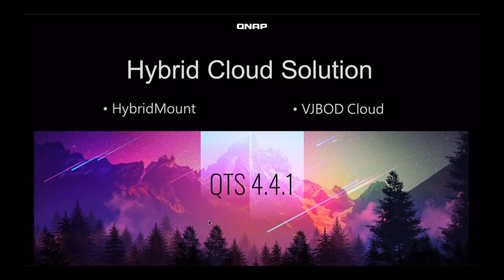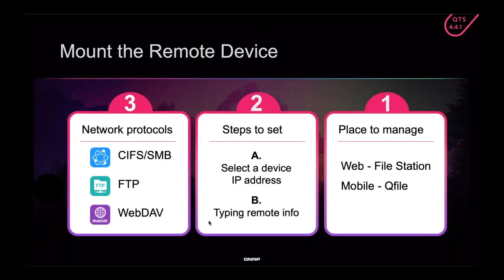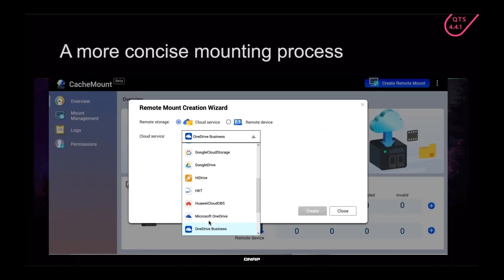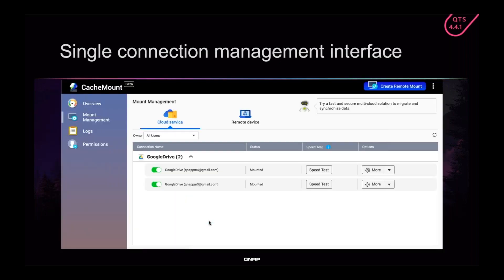Both features use your NAS as a cache space to increase the performance of public cloud. With Hybrid Mount, you can mount folders from other computers and servers through SMB, FTP, WebDAV, and you can mount public cloud storage. If you mount public cloud storage and use your NAS as a cache space, your other devices on the network can access that storage through SMB, AFP, and NFS. You can then manage your cloud services — both public cloud and remote devices — all from cache mount.